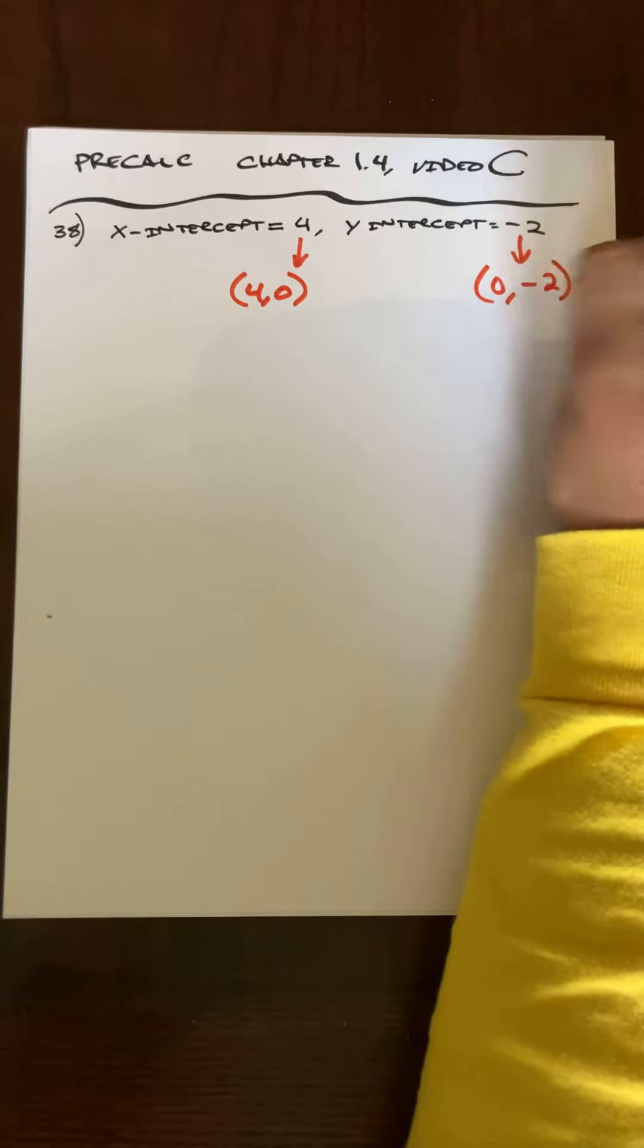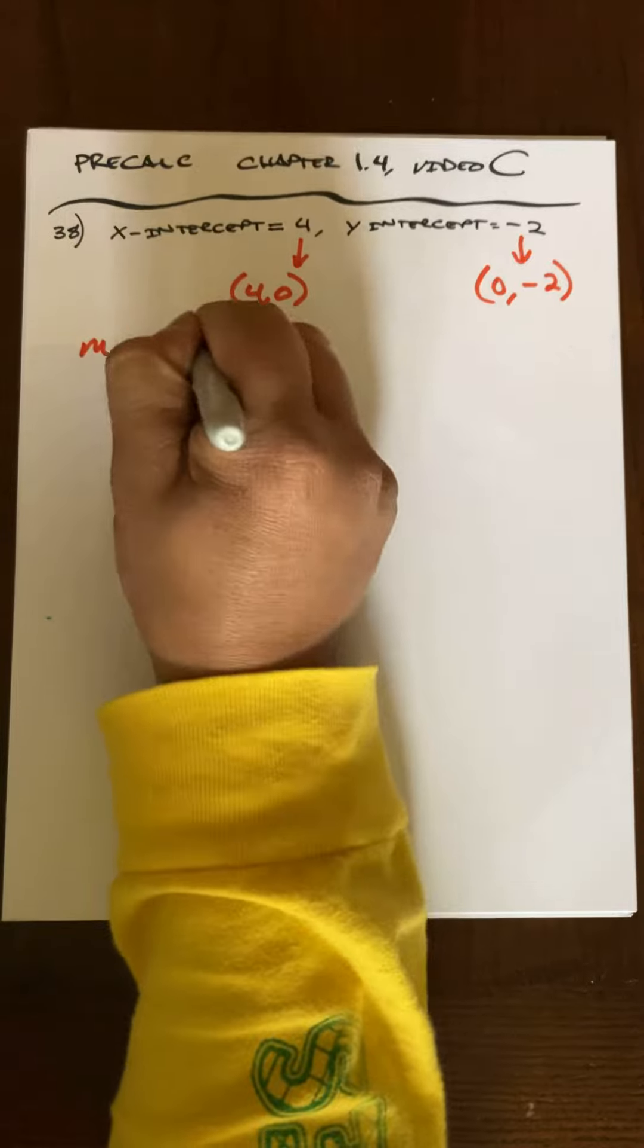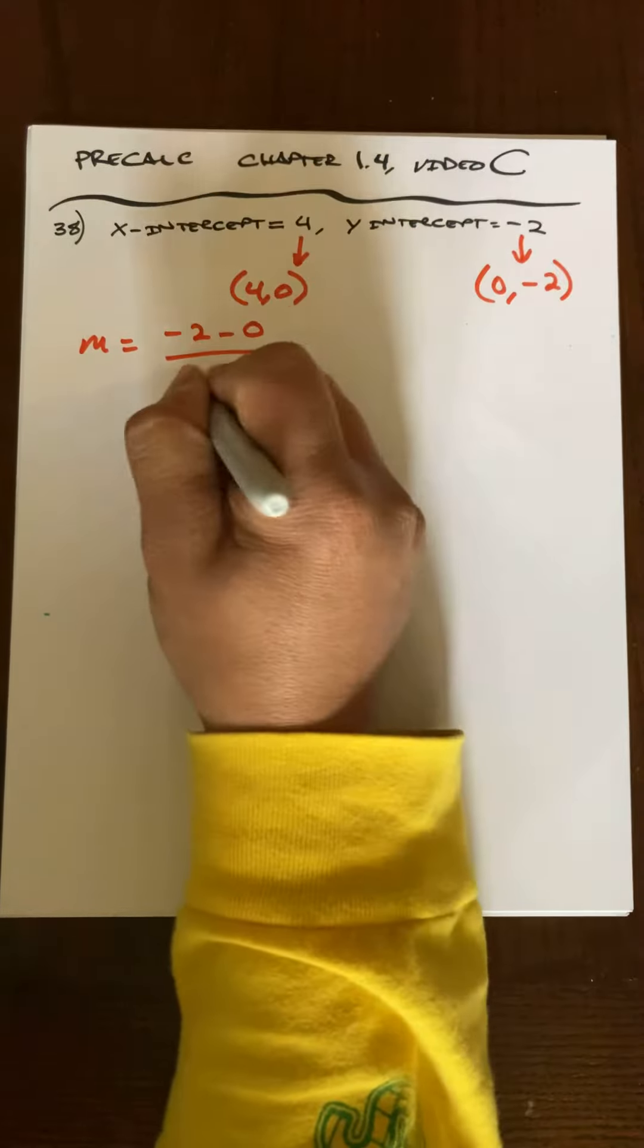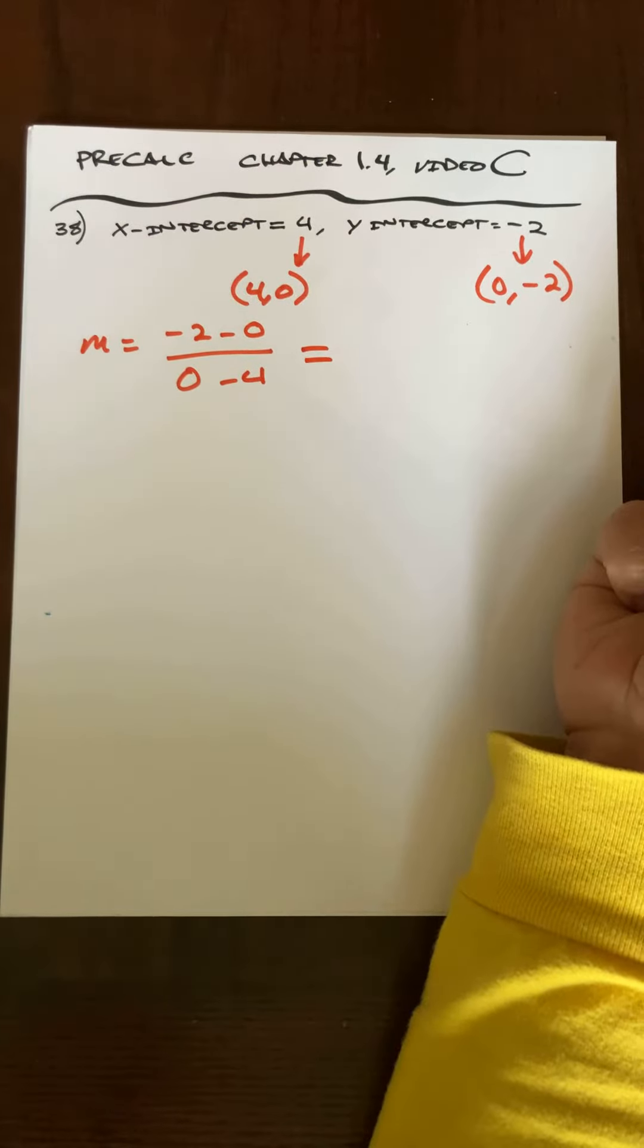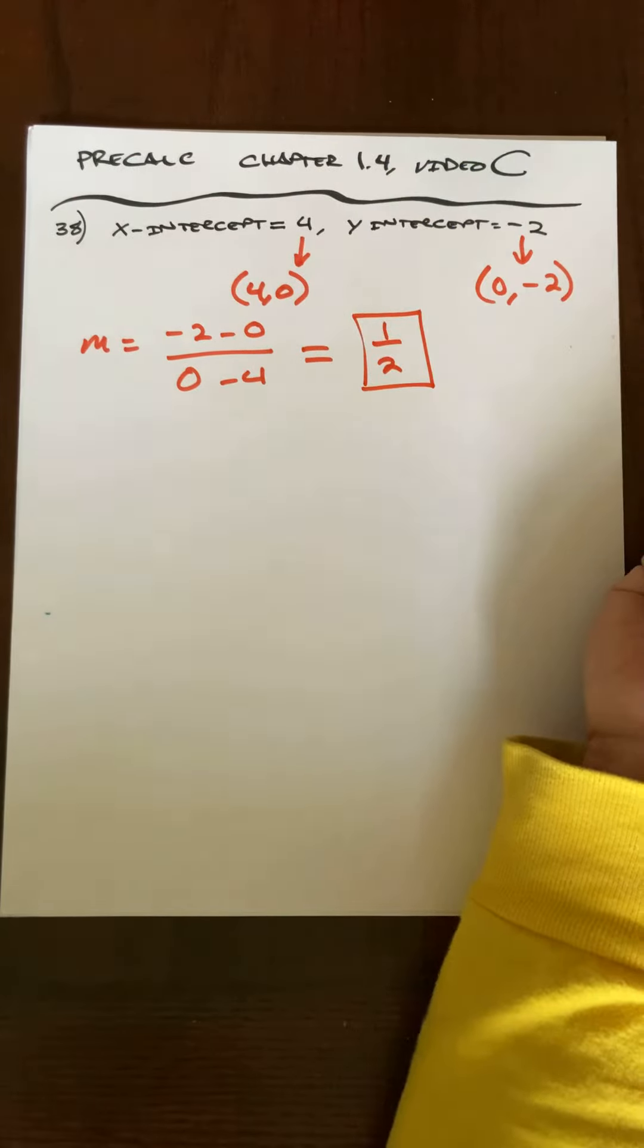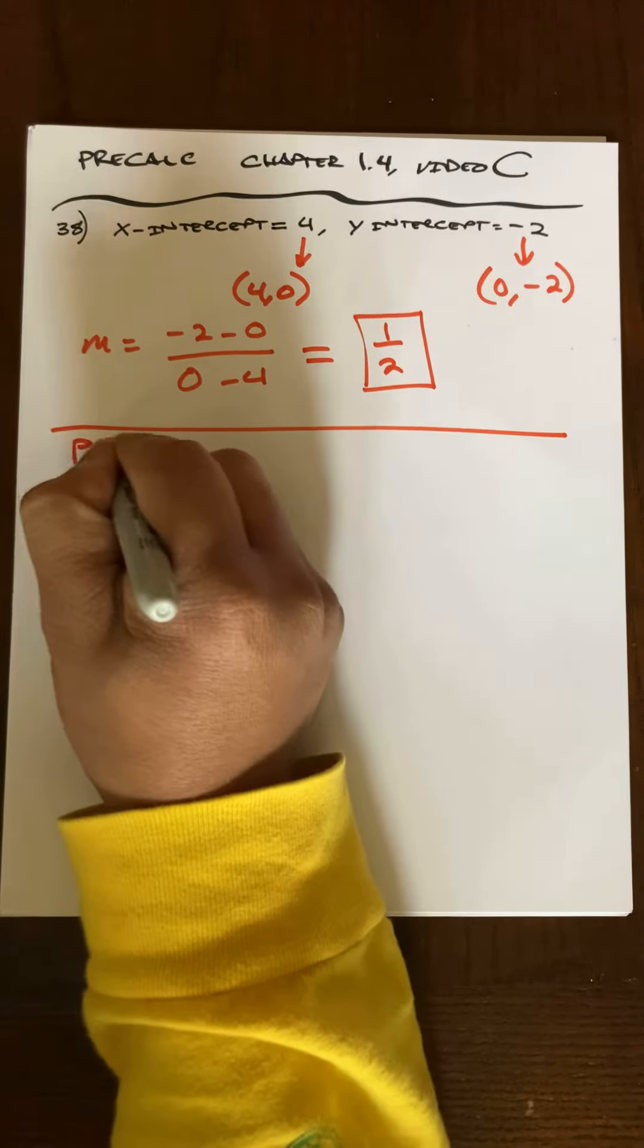All right, so my slope is just -2 minus 0 over 0 minus 4, and that is just positive 1/2. Okay, that is handy because now I could do the point-slope form of the line.